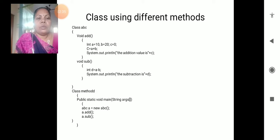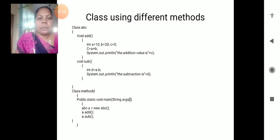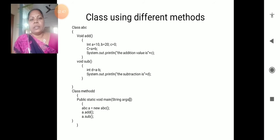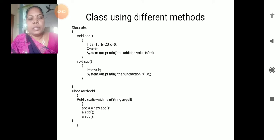Next, using different methods - how to create different methods in a single class. Here class ABC: void add is a method, we are preparing the statements, and again I am taking void sub - one more method within the class.